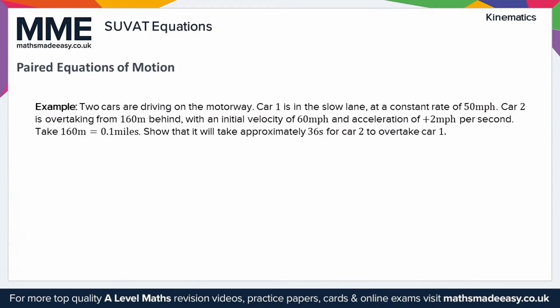Paired equations of motion: we've got two cars driving on a motorway. Car 1 is in the slow lane at a constant rate of 50 miles per hour. Car 2 is overtaking from 160 meters behind with an initial velocity of 60 miles per hour and an acceleration of plus 2 miles per hour per second. Take 160 meters equals 0.1 miles. Show that it will take approximately 36 seconds for car 2 to overtake car 1.